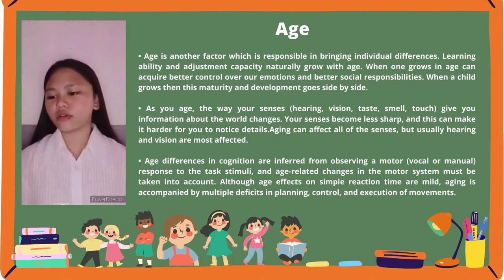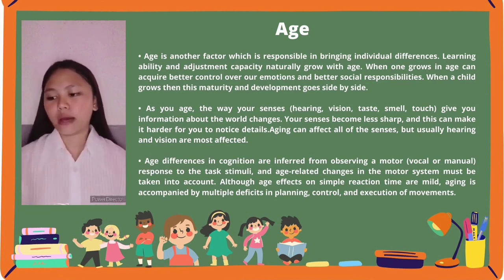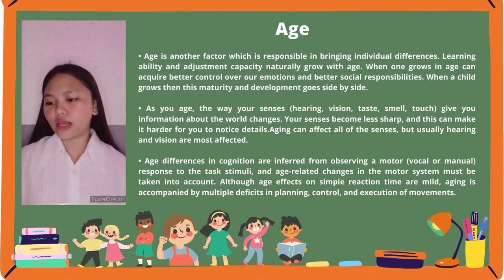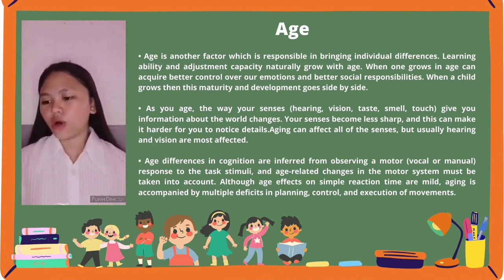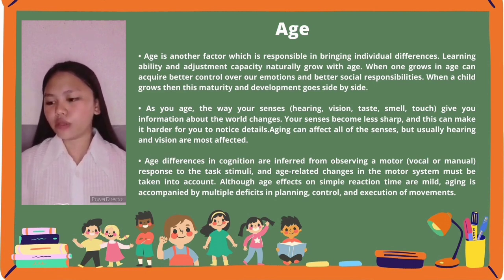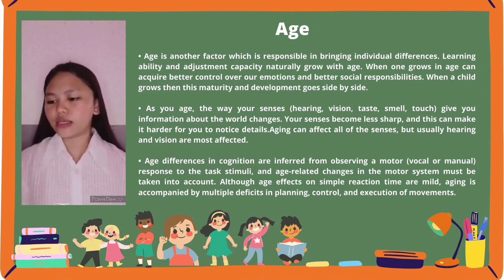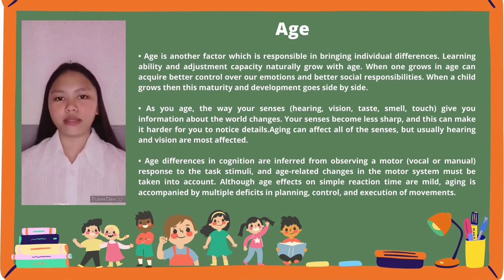Age differences in cognition are inferred from observing motor, vocal, or manual responses to test stimuli, and age-related changes in the motor system must be taken into account. Although age effects on simple reaction time are mild, aging is accompanied by multiple deficits in planning, control, and execution of movements.